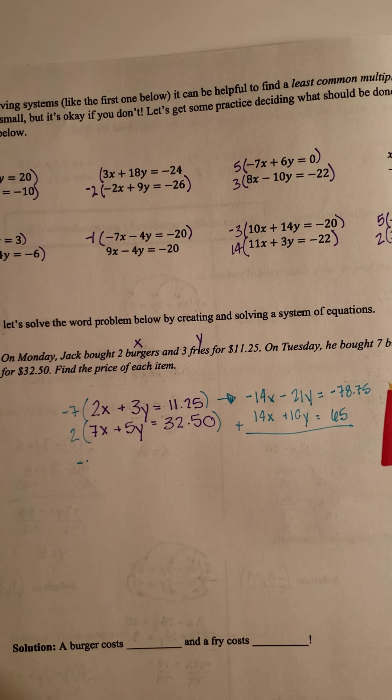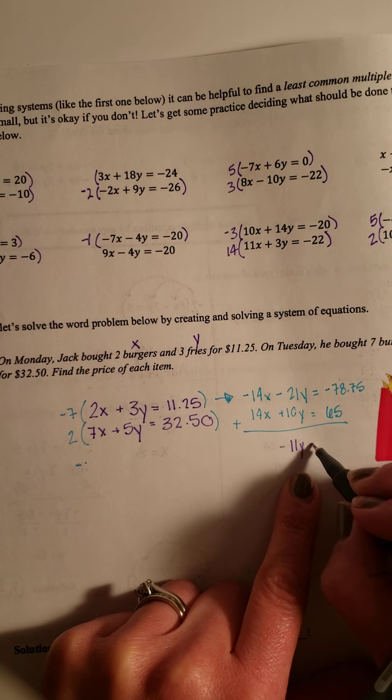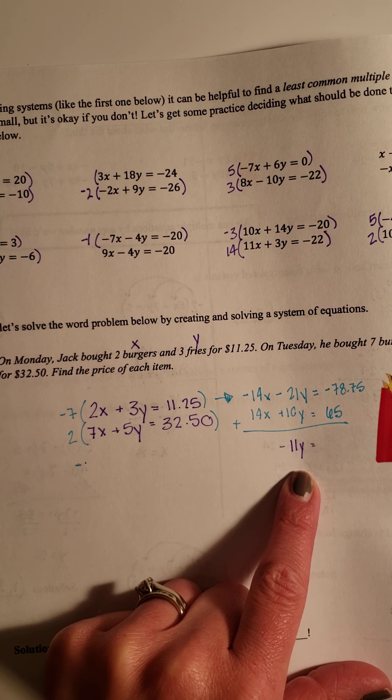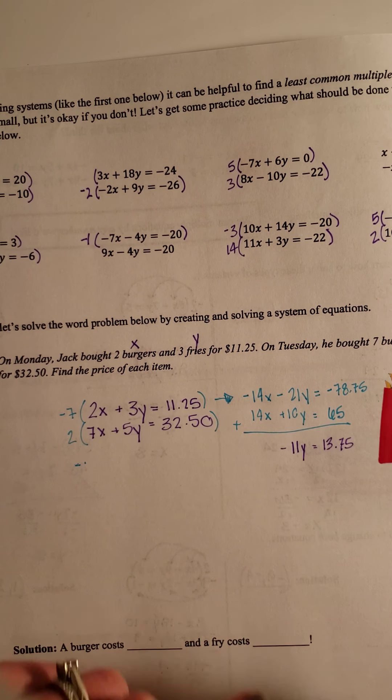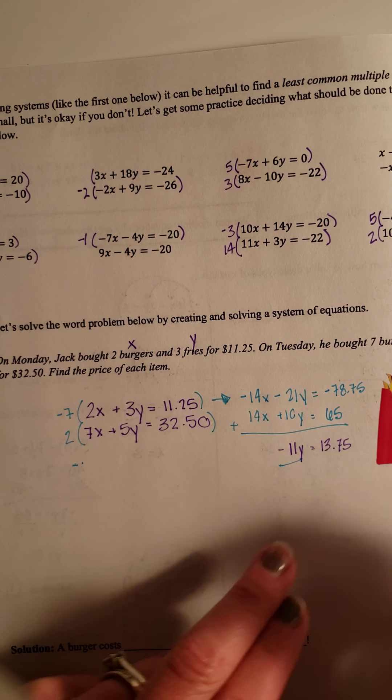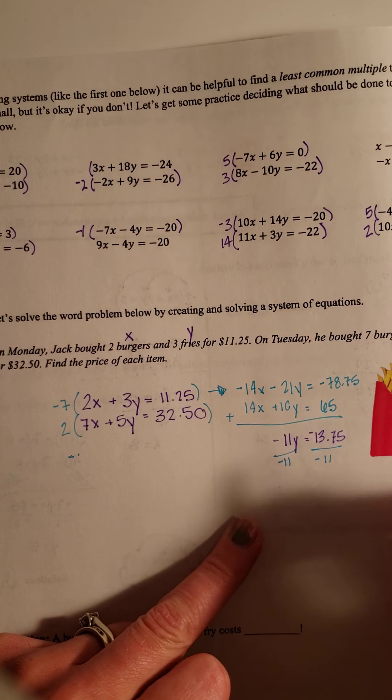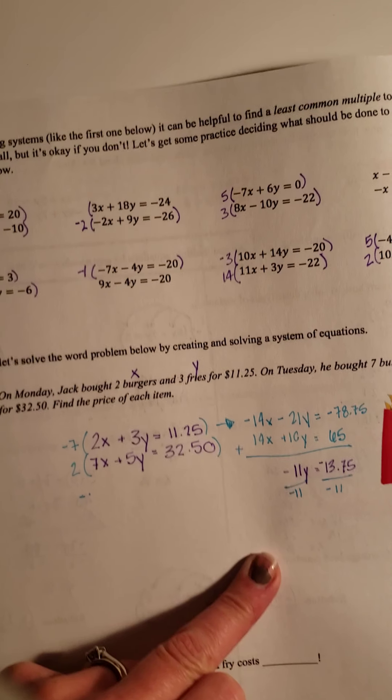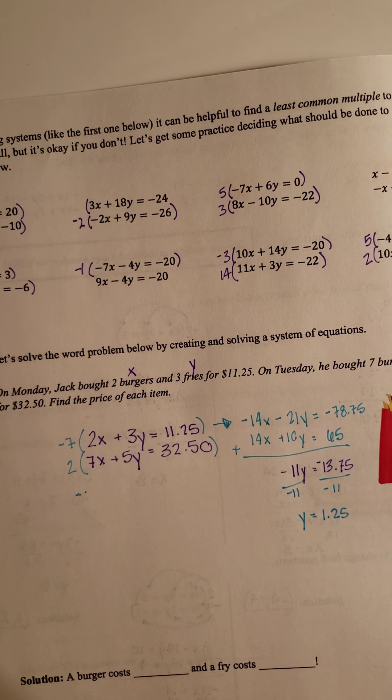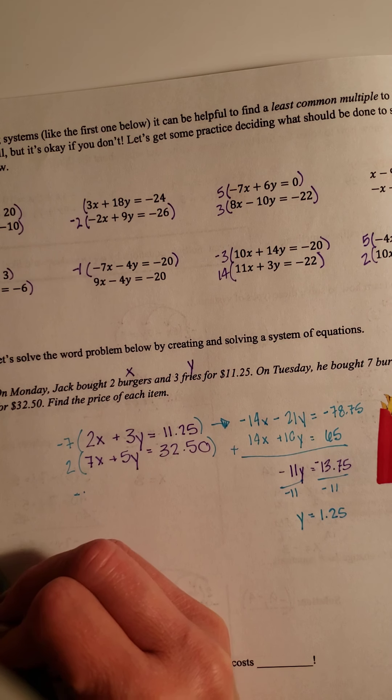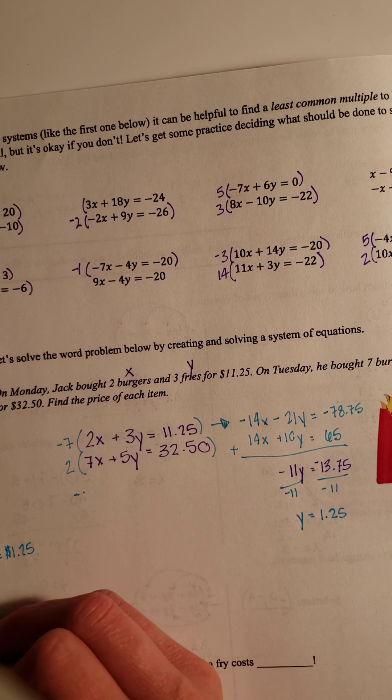My X's cancel. Then I can subtract the other ones. I get 11Y, and that's negative. And then, 78 minus 65. I get 13.75. Then I'm going to divide both sides by that -11. Oh, this was a -2. And I get $1.25. So my Y is $1.25. Well, what's Y? Y is my fries. So the fries equal $1.25.